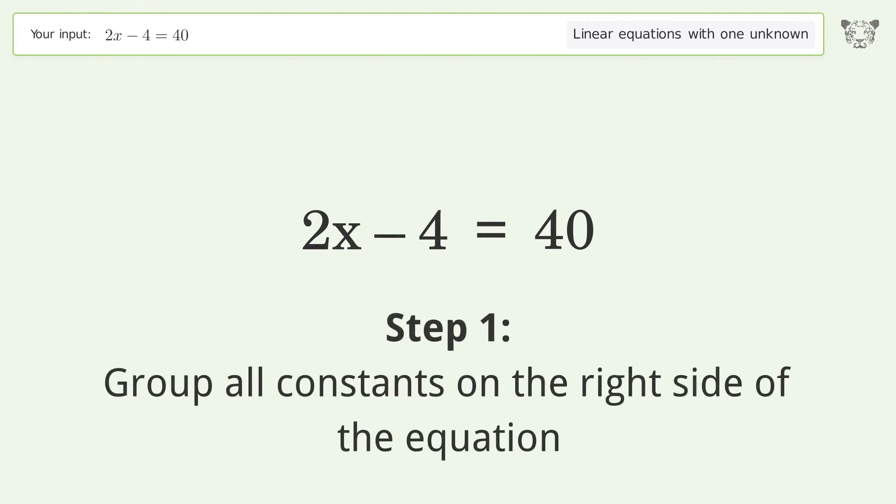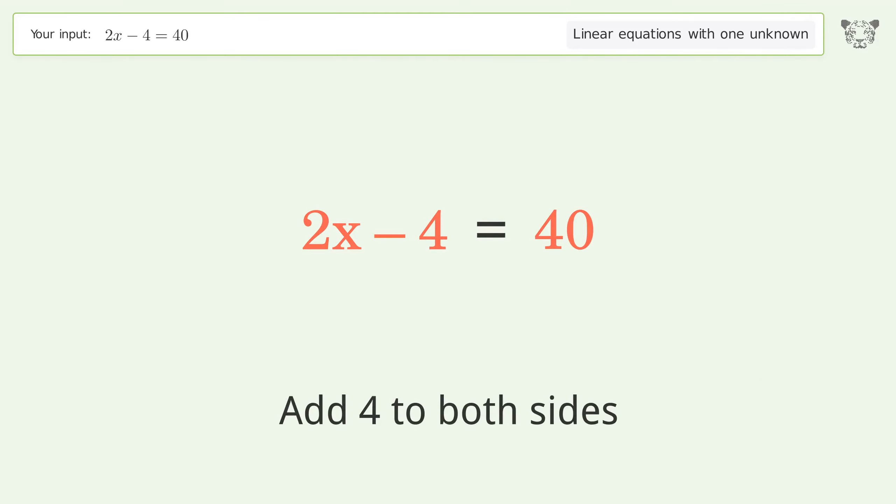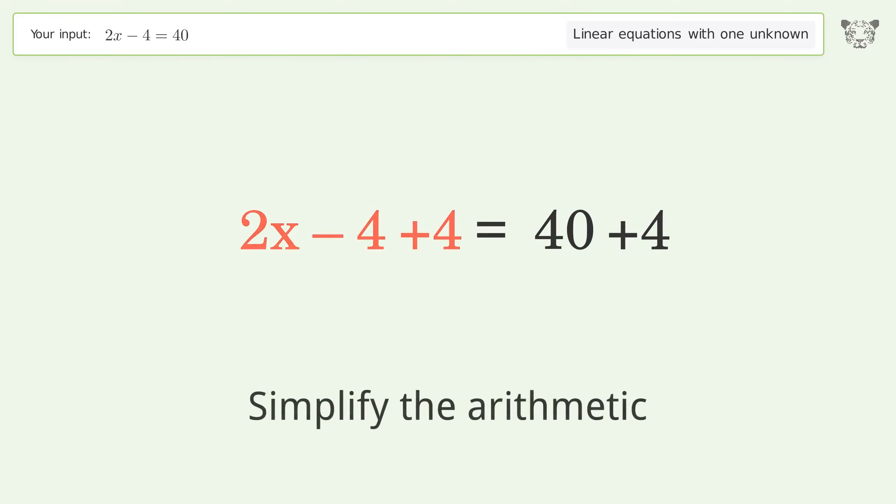Group all constants on the right side of the equation. Add 4 to both sides. Simplify the arithmetic.